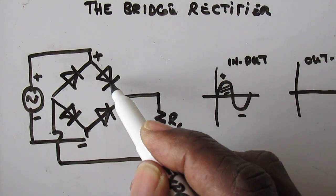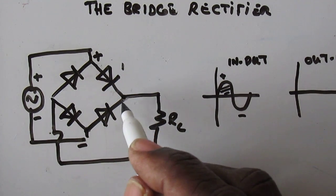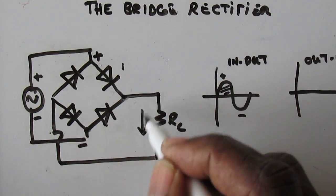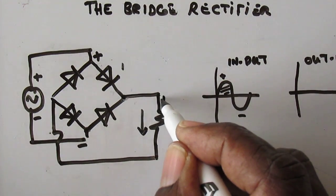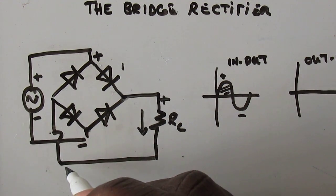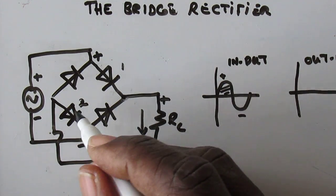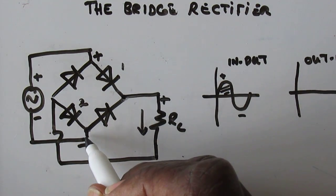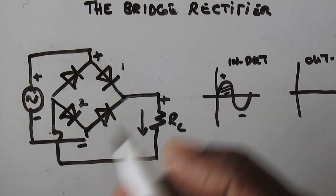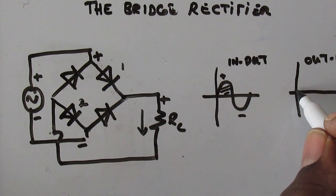Considering conventional current flow, current will flow from the positive supply through to this point. It cannot go through this diode as it is reverse biased — it will go through diode number one, and flow down to the load. This side of the load becomes positive. It then attempts to get back to the supply, going through diode number two, completing the circuit. So during the positive half cycle the output is still positive.